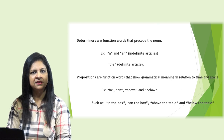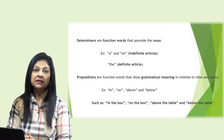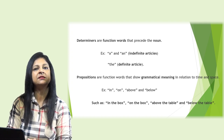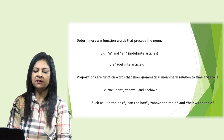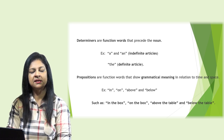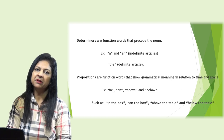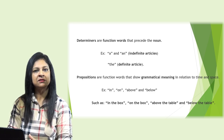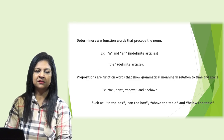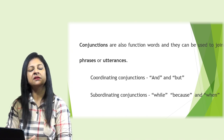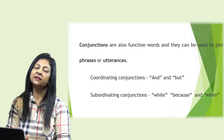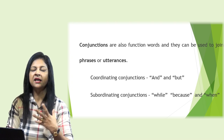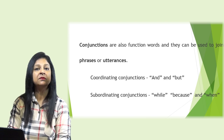Determinants are function words that precede a noun. For instance: a, an — these are indefinite articles — and the, which is the definite article. Prepositions are function words that show grammatical meaning in relation to time and space: in, on, above, below — for example, 'in the box,' 'on the table,' 'above the table,' 'below the table.' Conjunctions are function words used to join phrases or utterances, such as coordinating conjunctions and and but, and subordinating conjunctions while, because, and when.